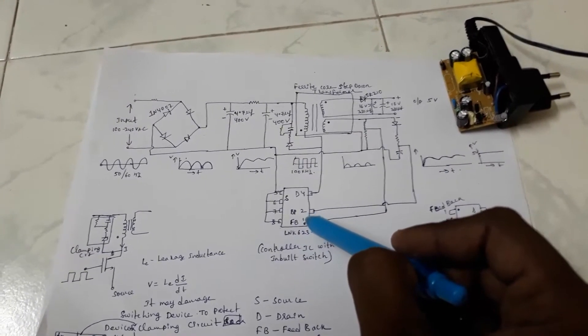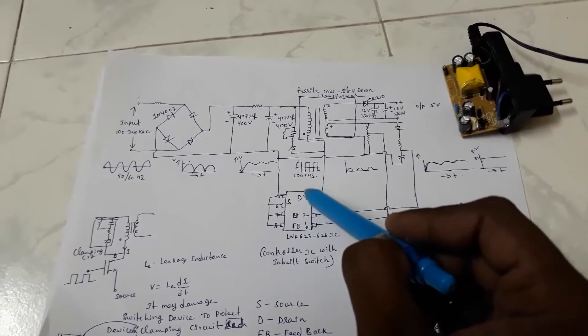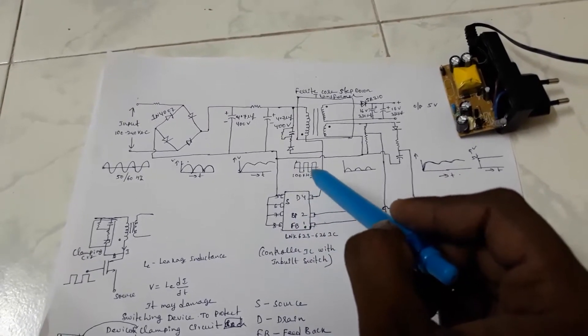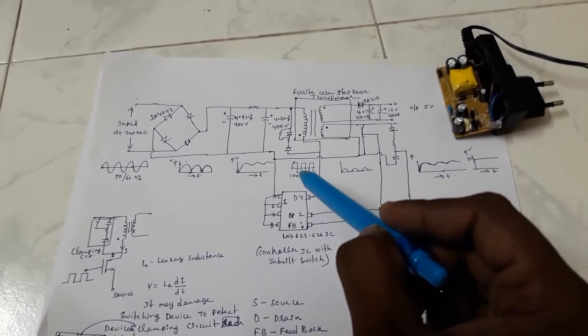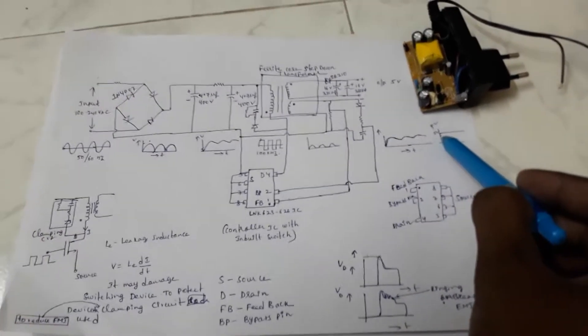This feedback voltage is compared with the internal reference. Depending upon that difference, this controller will drive the internal MOSFET switch by varying the on time of that MOSFET switch, so the final output voltage will be DC which is of 5 volts.